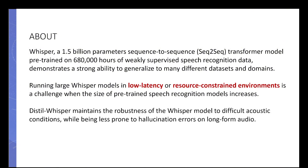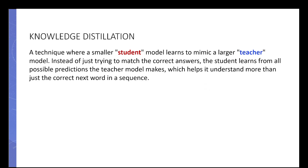The Distil-Whisper maintains the robustness of the Whisper model to different acoustic conditions but is less prone to hallucination errors on long-form audio, so it shrinks the size of the model while giving you something less prone to hallucination. Knowledge distillation is a process where we employ two sets of models: one called the student and one called the teacher. The student is a copy of the teacher, but in the student model we remove some layers and train it to learn all possible predictions from the teacher — not just the correct answers — which helps it understand more about context.